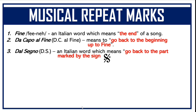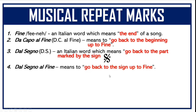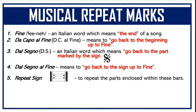Dal Segno, or DS, is an Italian word which means go back to the part marked by the sign. And that is the sign that you should look out for. Dal Segno al Fine means to go back to the sign up to the word fine. These bars with dots are called a repeat sign, used to repeat the parts enclosed within those bars.